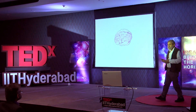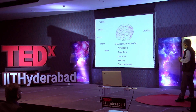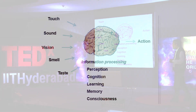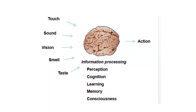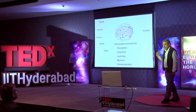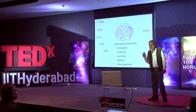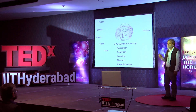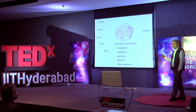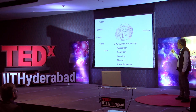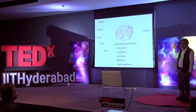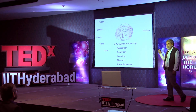Before we go to that particular topic, a little bit about the brain. The brain is one organ in the body which is least understood. We understand how the heart works, we understand how the immune system works, we understand a whole lot of things about our liver, but we don't understand how the brain works.